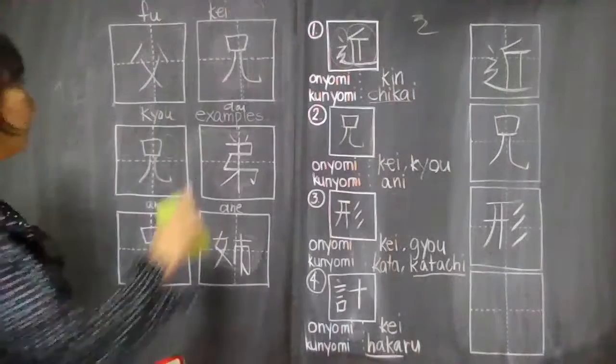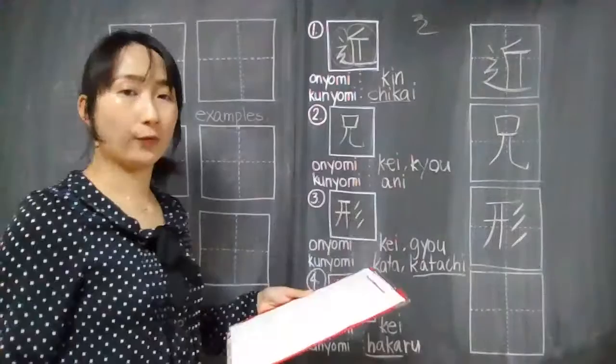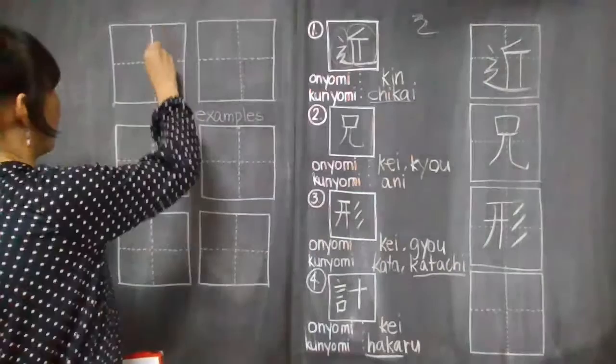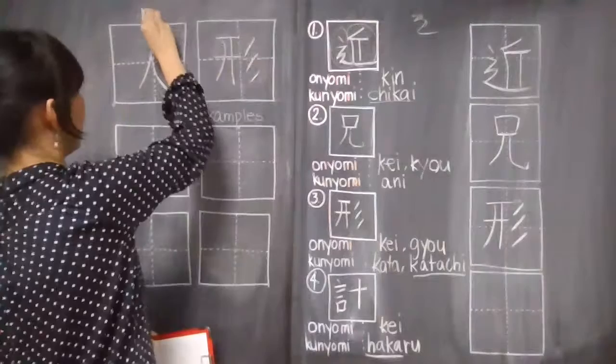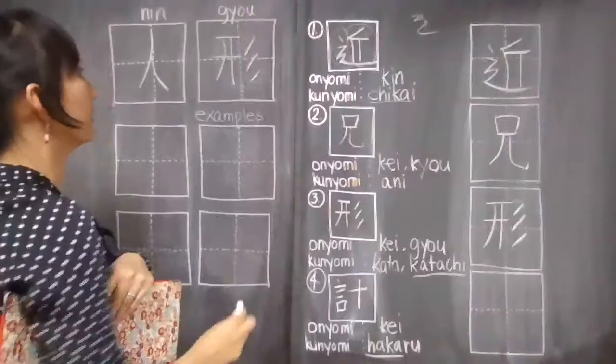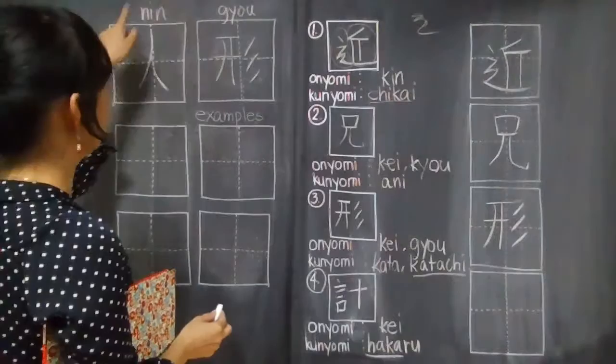Ningyo. Ningyo, which means doll. All we have to do is to write the kanji for nin, hito, hito no kanji, plus katachi, katachi no kanji. So it's ningyo. Guys, let's check the kanji. As you can see, there is hito, person plus katachi, shape. Person, shape, so it's a doll. The meaning of ningyo. Ningyo is a doll.